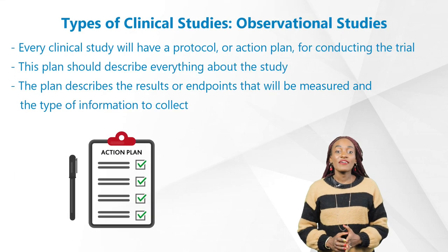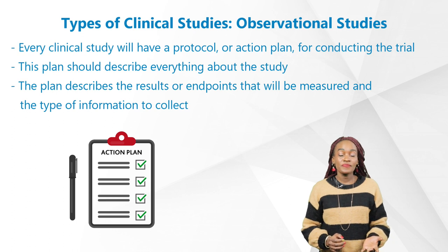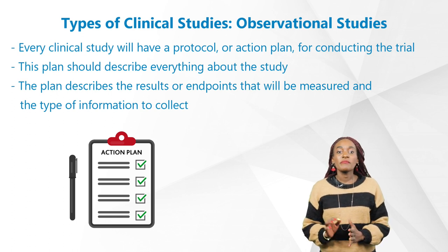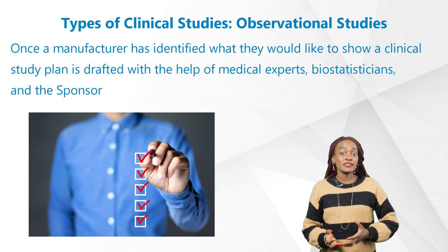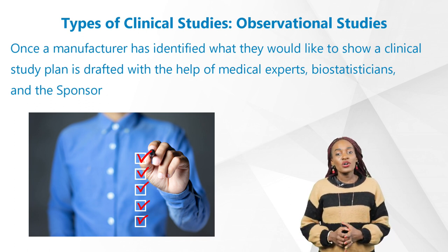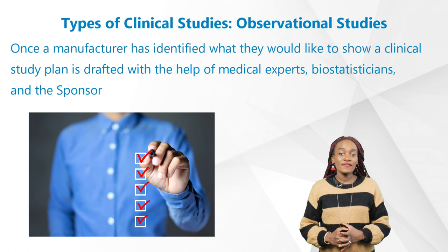Every clinical study will have a protocol or action plan for conducting the clinical trial. This plan should describe everything about the study, such as the type of patients who can enter the trial, the schedule of tests and procedures including the dosage, the necessary follow-ups, the length of the study, the results or endpoints that will be measured, and the type of information to collect.